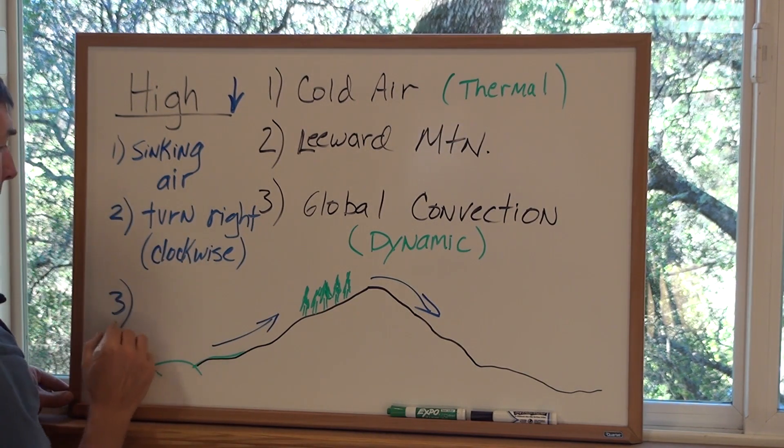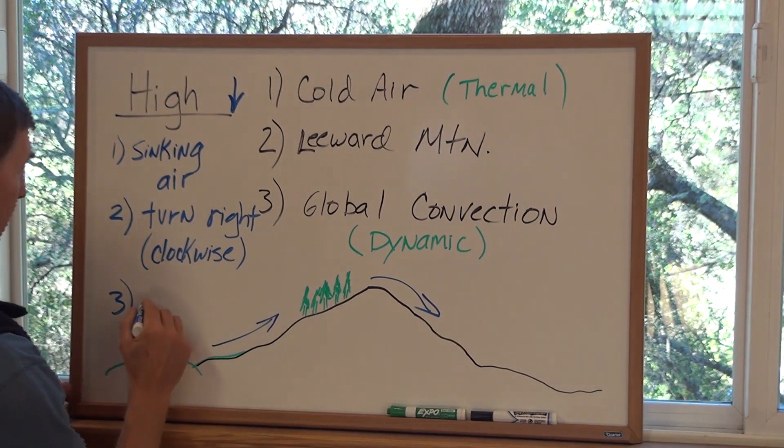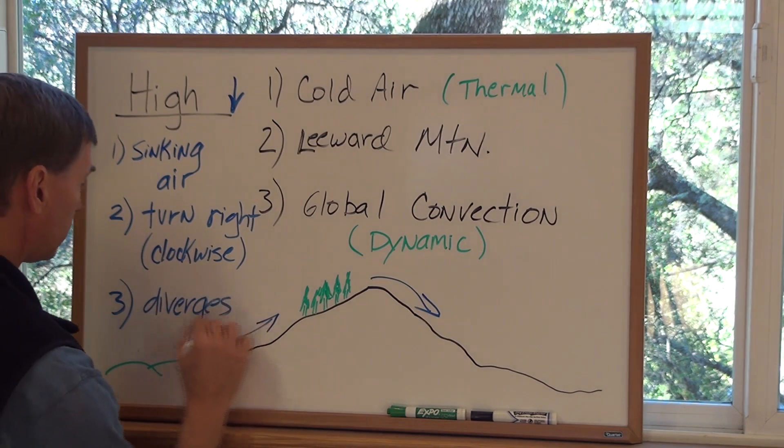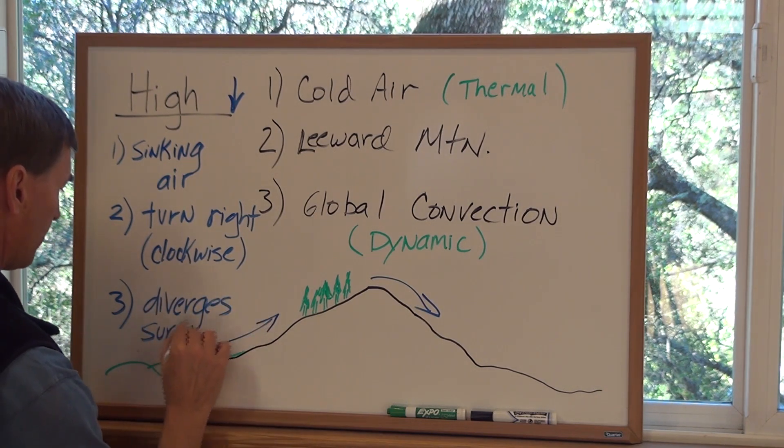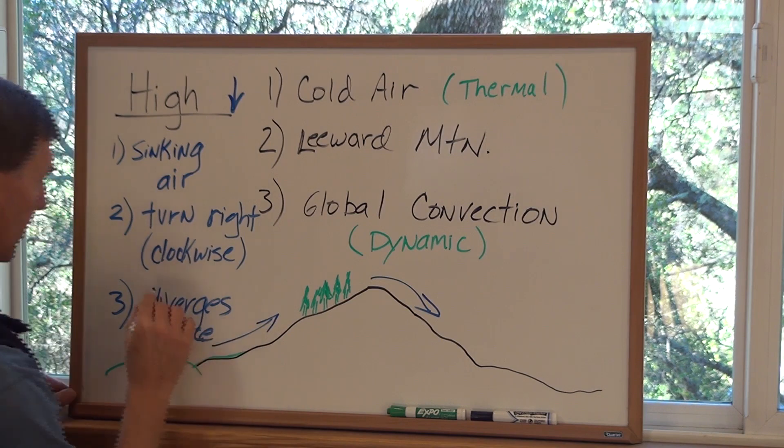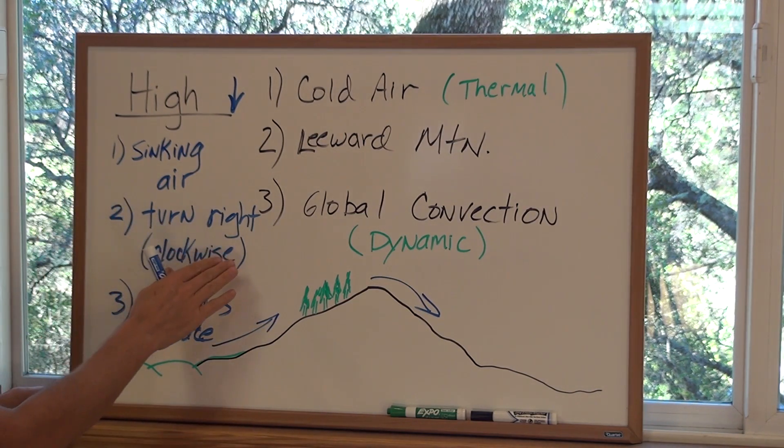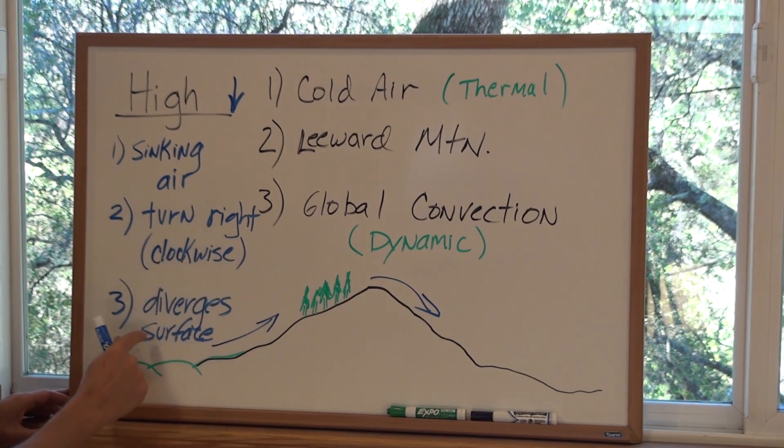And then number three, and I'm going to demonstrate this here in a moment, is that it diverges. This air diverges at the surface. Now right now let's just memorize this: sinking air, it turns to the right or clockwise in the northern hemisphere, and it diverges at the surface.